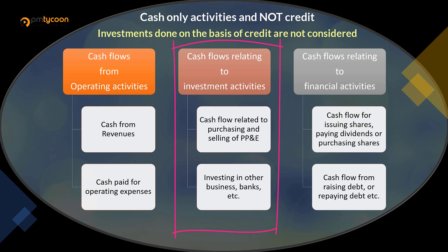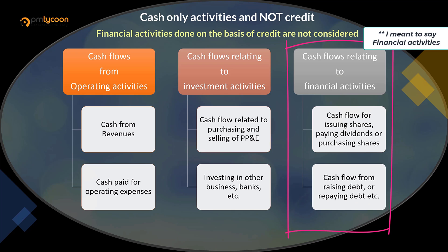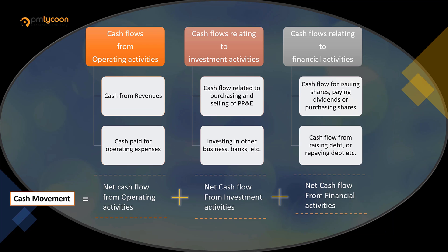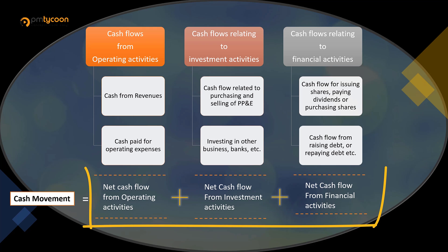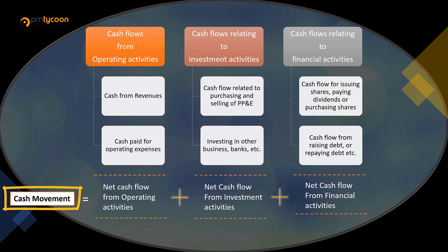Cash flows relating to investing activities include purchasing or selling property, plant, and equipment for cash. Finally, cash flows relating to financing activities include all activities except operating and investing activities — for example, buying back shares, paying dividends to shareholders, issuing new shares for money, taking on debt, or repaying debt. Once categorized, you take the net cash from operating, investing, and financing activities and sum them up to get the net cash movement for the accounting period.